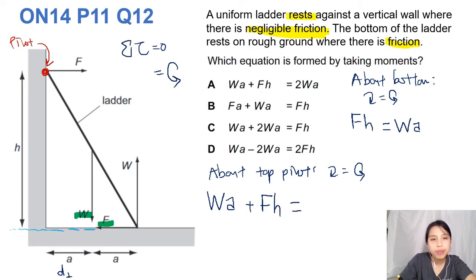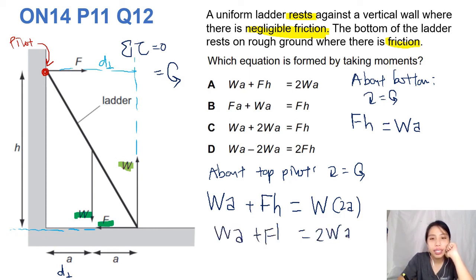Equal to anything moving it anticlockwise. Yes, we do. We have the W here. Going to bring it anticlockwise. So we can write there. W times. What's the distance? Perpendicular distance. You can draw this up all the way. And say, this is our perpendicular distance, which is 2A. Now we can take a look. 2WA equals WA plus FH. And the answer will be A.